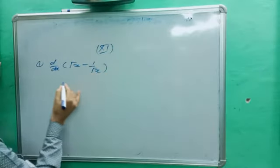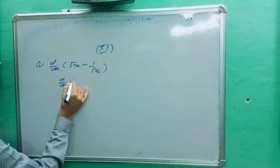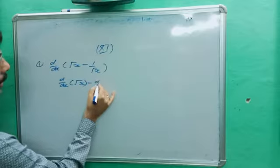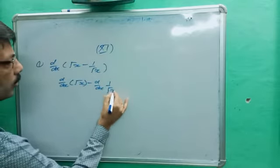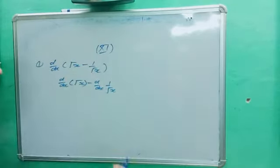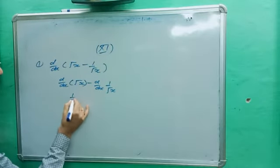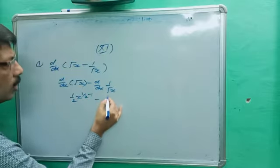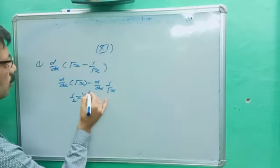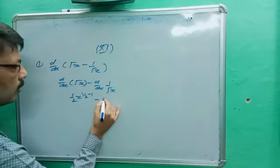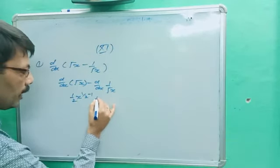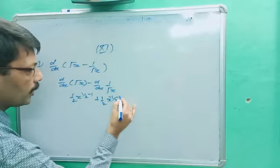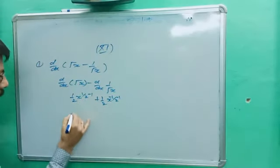This is a very easy question. We can write d/dx of root x minus d/dx of 1 by root x — this is the formula for u minus v. So we get one upon two, it becomes 1 upon 2 x power (1/2 - 1), minus sign goes up, so we get plus 1 upon 2 x power (-1/2 - 1).